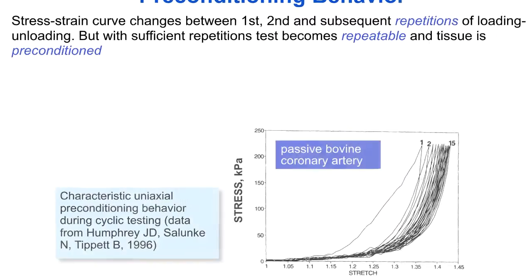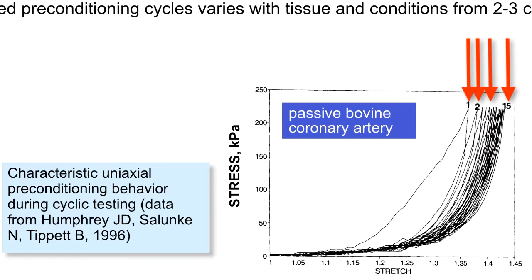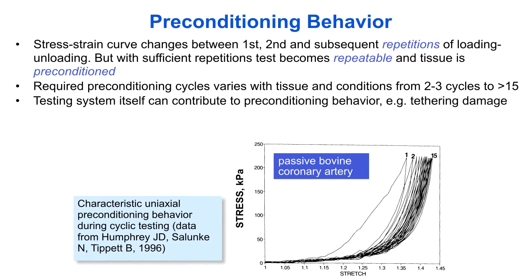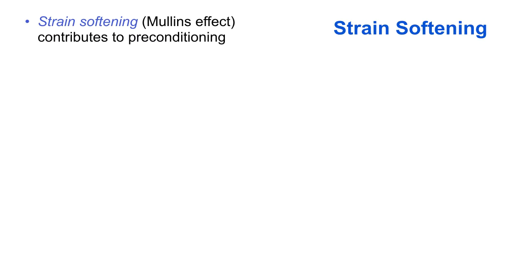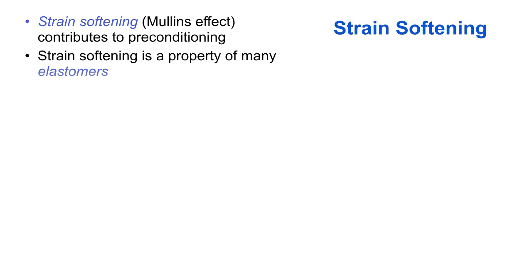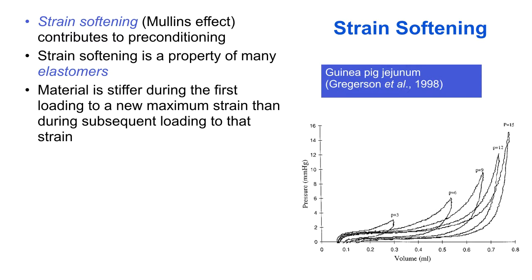Pre-conditioning behavior is a property of all soft tissues that is very important for anyone doing tissue testing. This is the property where the stress-strain curve changes from the first to the second and subsequent repetitions of the loading and unloading cycle. Eventually, after about 3 to 20 repetitions, the cycle becomes reproducible and the tissue is said to be preconditioned. The preconditioned state is often regarded as the most representative of the in vivo or homeostatic state of the tissue. Strain softening, or the Mullins effect, contributes to preconditioning behavior — it is a property of many elastomers in which the material is stiffer during the first loading to a new maximum strain than during subsequent loading to that strain.